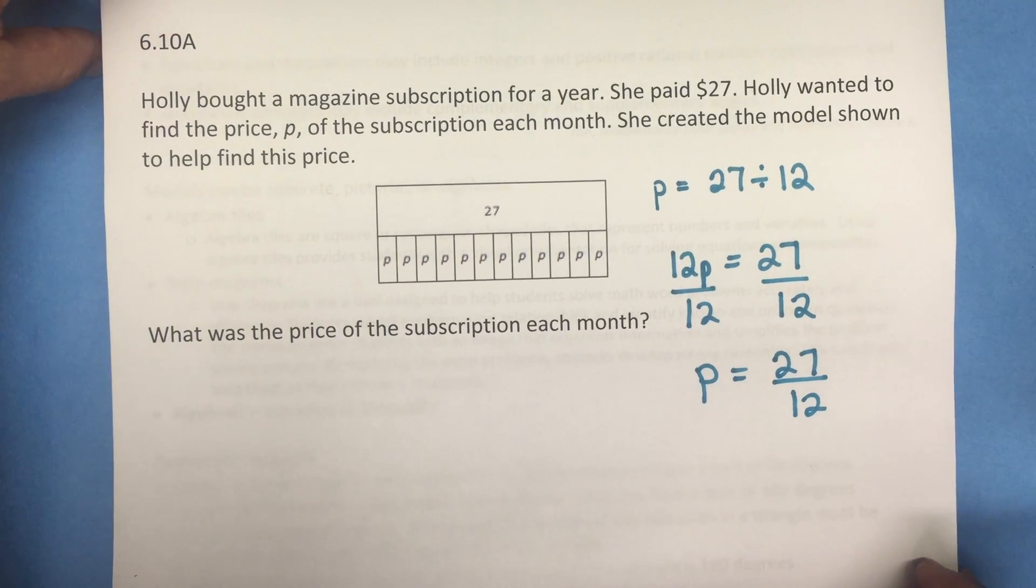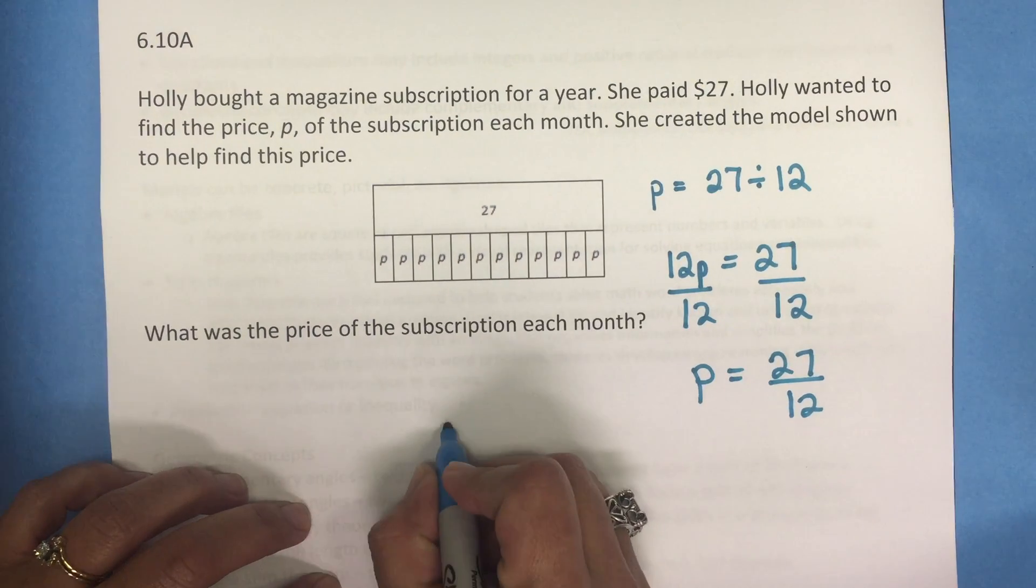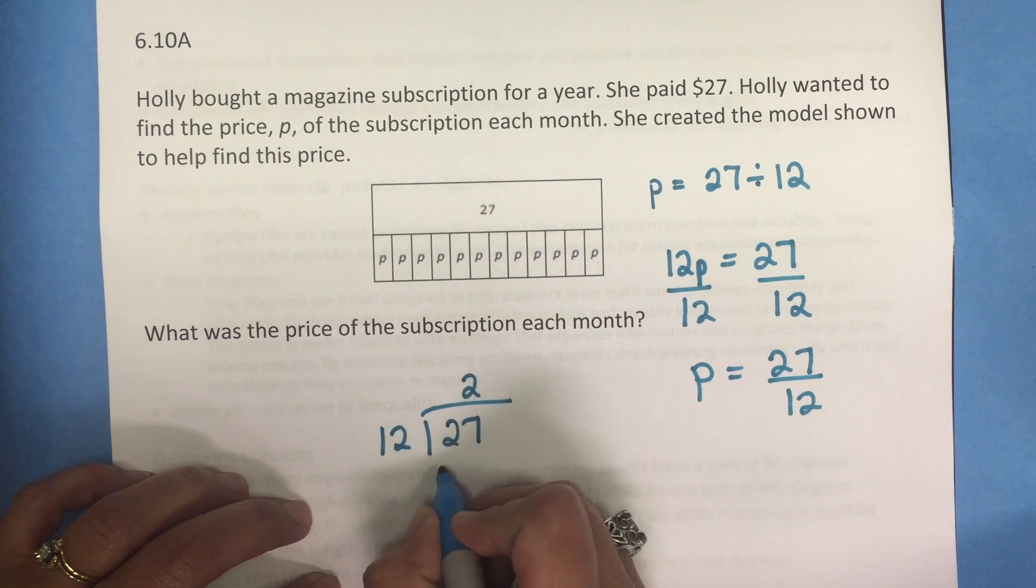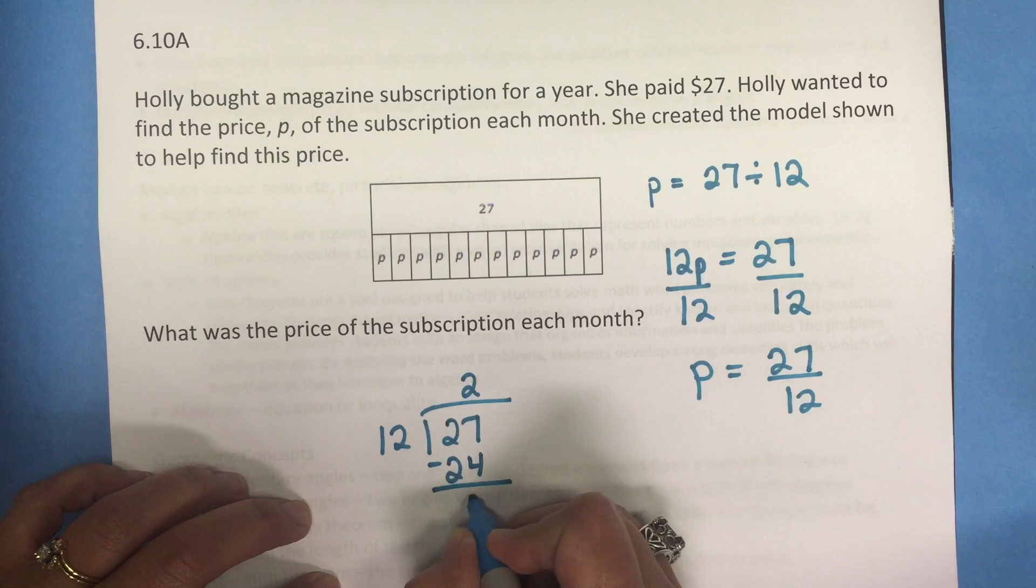Let's go ahead and determine what is 27 divided by 12, and to do that we're just going to use the standard algorithm.